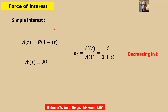We will derive an expression for delta t. First, we will consider accumulation based on simple interest at annual rate i. If we do differentiation, the first derivative will be p times i. Now, using the formula delta t equal to a prime t divided by a t, putting p i in the numerator and p into 1 plus i t in the denominator, and canceling p, we get i divided by 1 plus i t, which is decreasing in t.